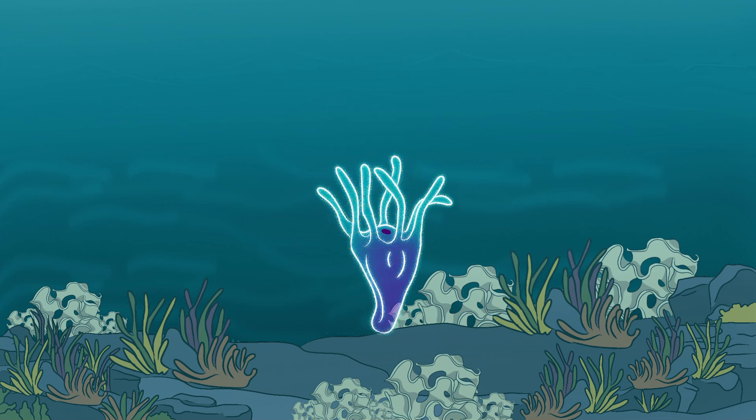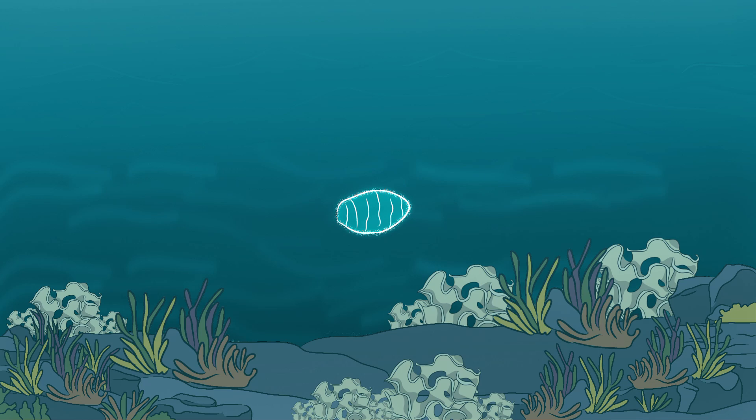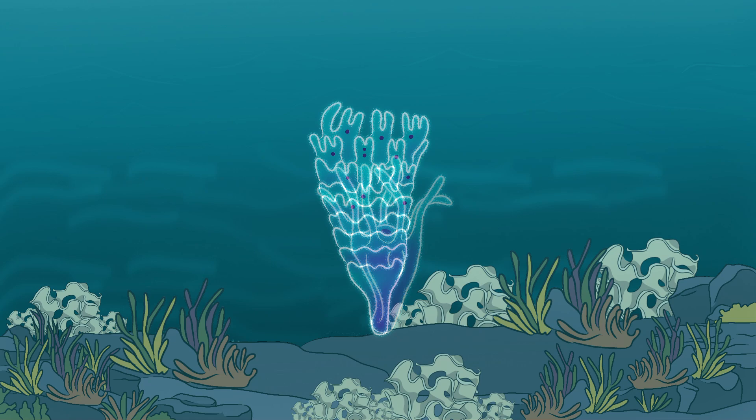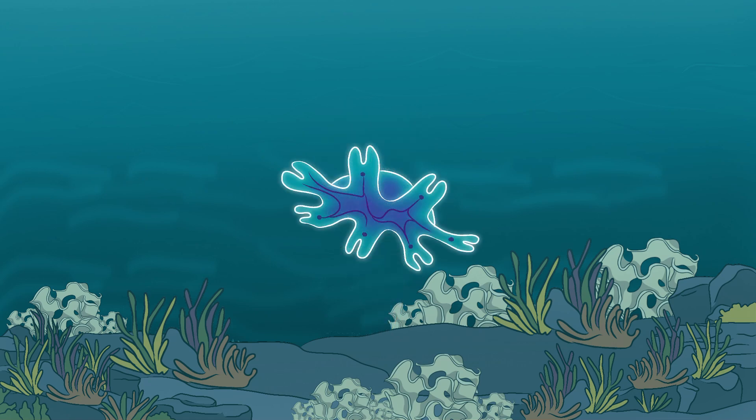The jellyfish's body shrinks, its tentacles disappear, and it transforms into a tiny polyp settling onto the ocean floor. From there, it starts life over, growing back into a full-grown jellyfish once again.